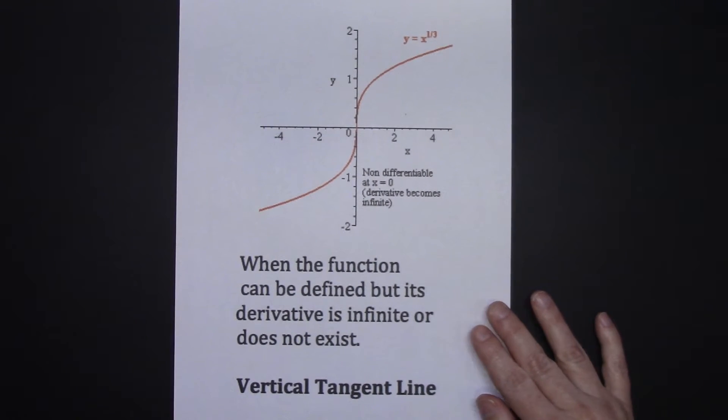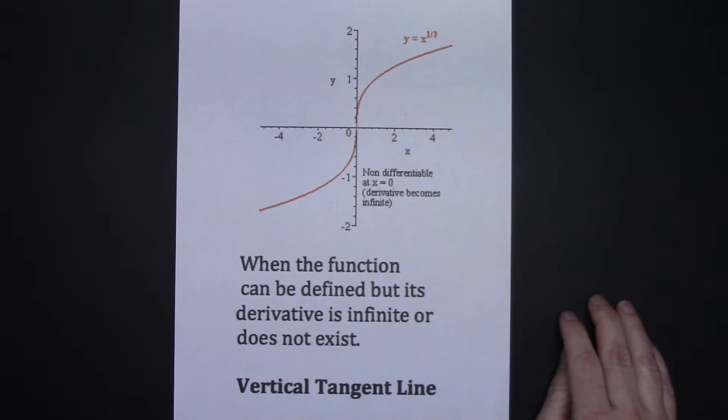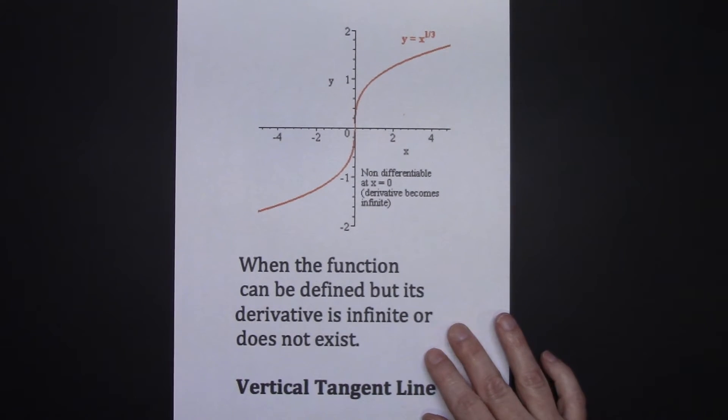In my next example, we have a vertical tangent line. When the function itself can be defined, but its derivative is either infinite or does not exist, then the derivative does not exist at that point.